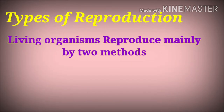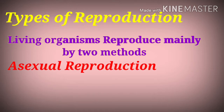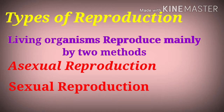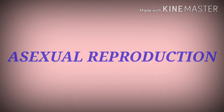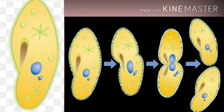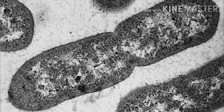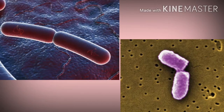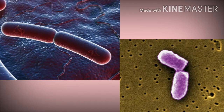Coming to the types of reproduction, living organisms reproduce mainly by two methods: asexual reproduction and sexual reproduction. Asexual reproduction is a mode of reproduction by which genetically identical offsprings are produced from a single parent. In this form of reproduction, offsprings are produced without the fusion of gametes. It is a common process of reproduction in lower plants and animals.